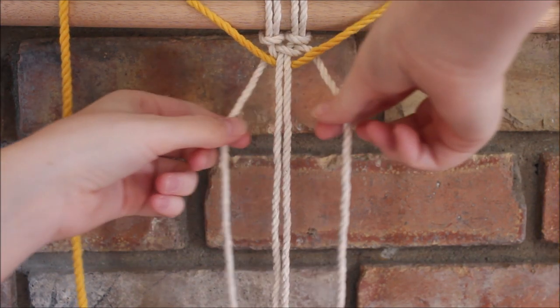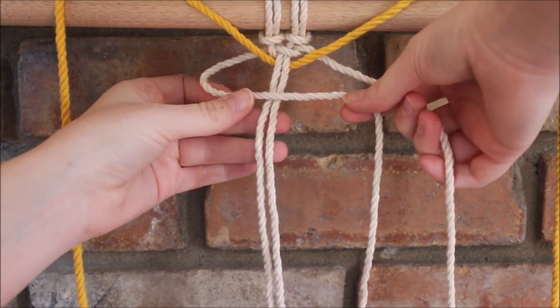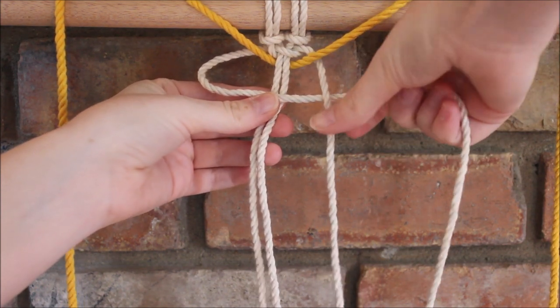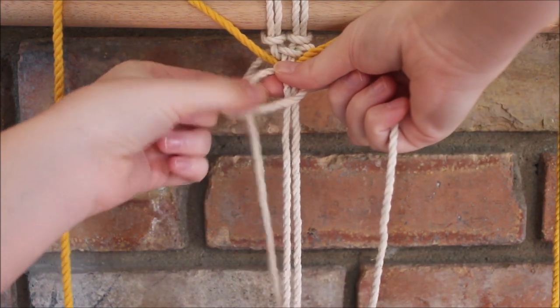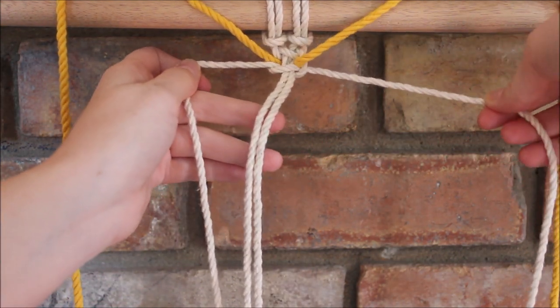And then I'm going to finish my square knot. So I'm going to take the side on the left this time to cross over the two in the middle to form my loop. The side on the right goes over that left rope, behind the two in the middle, and up through the loop. And then I just pull that nice and tight.